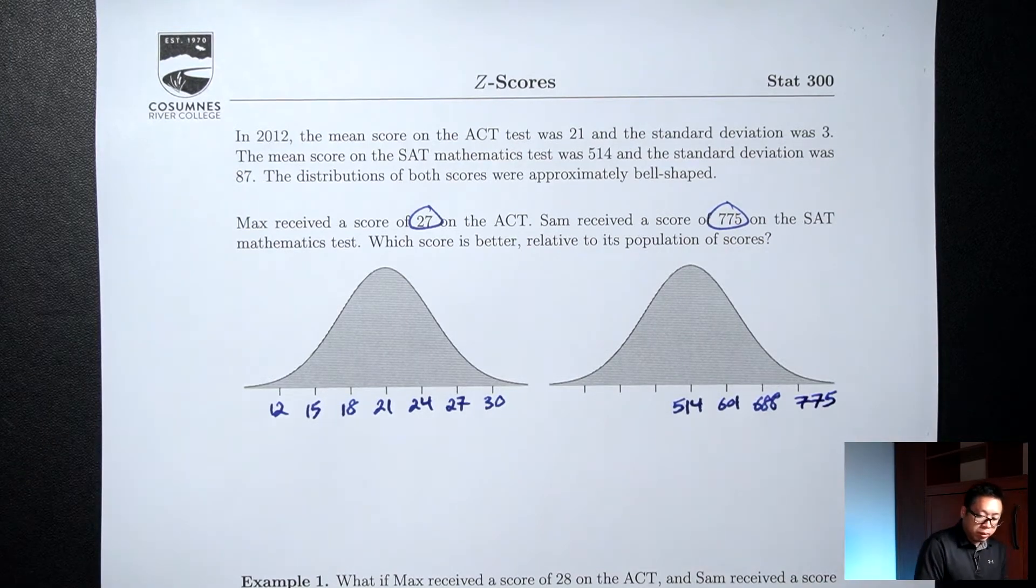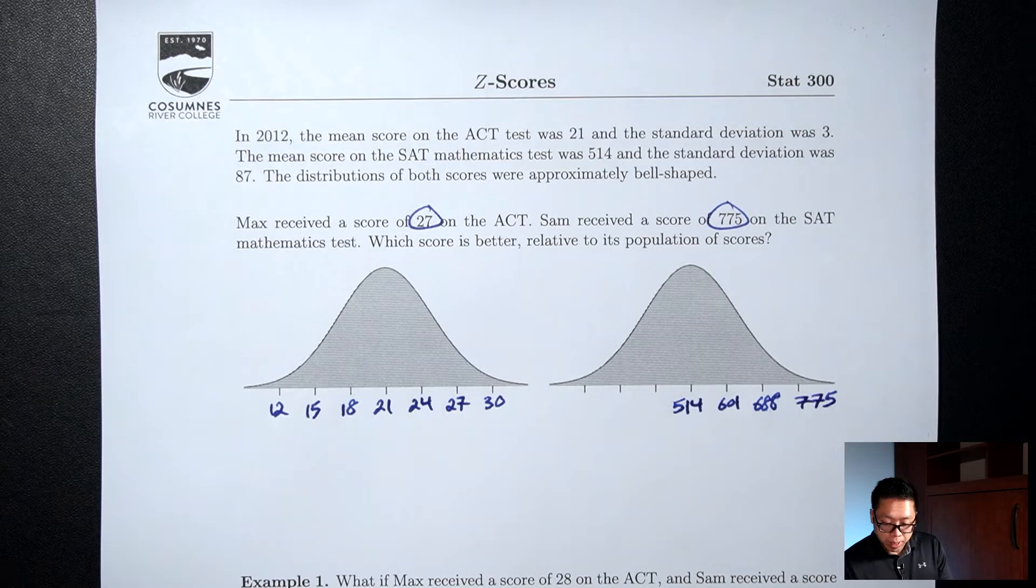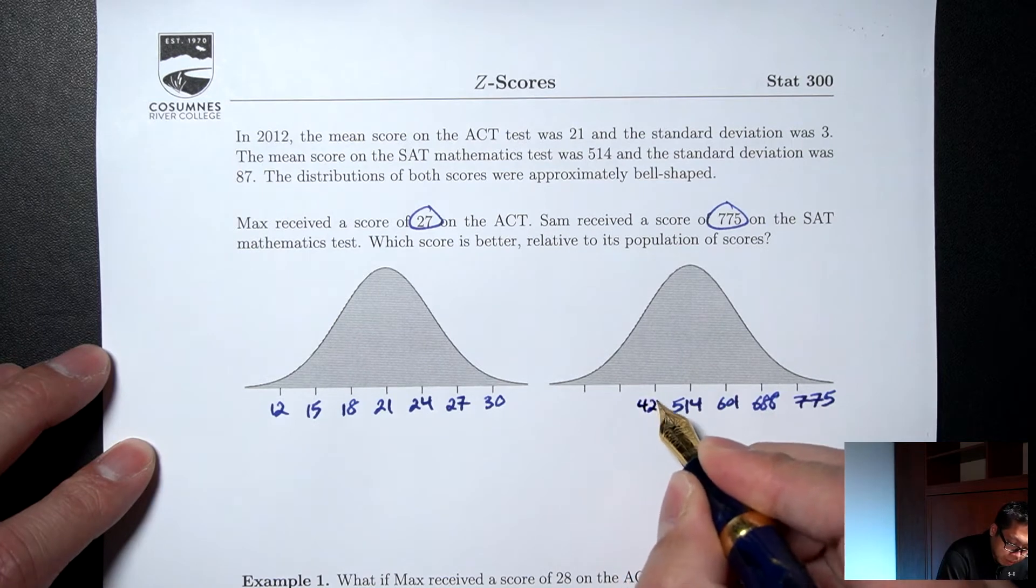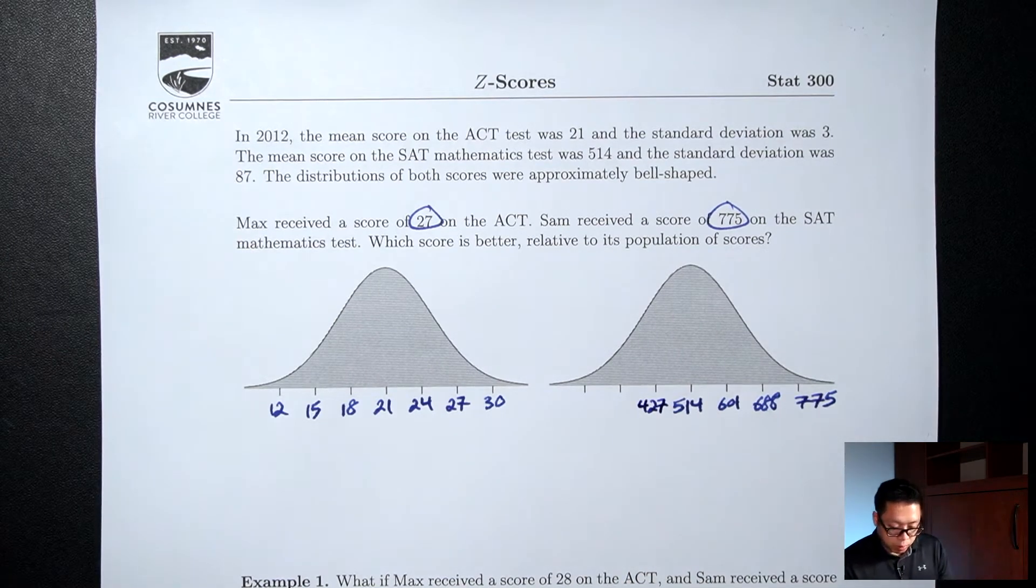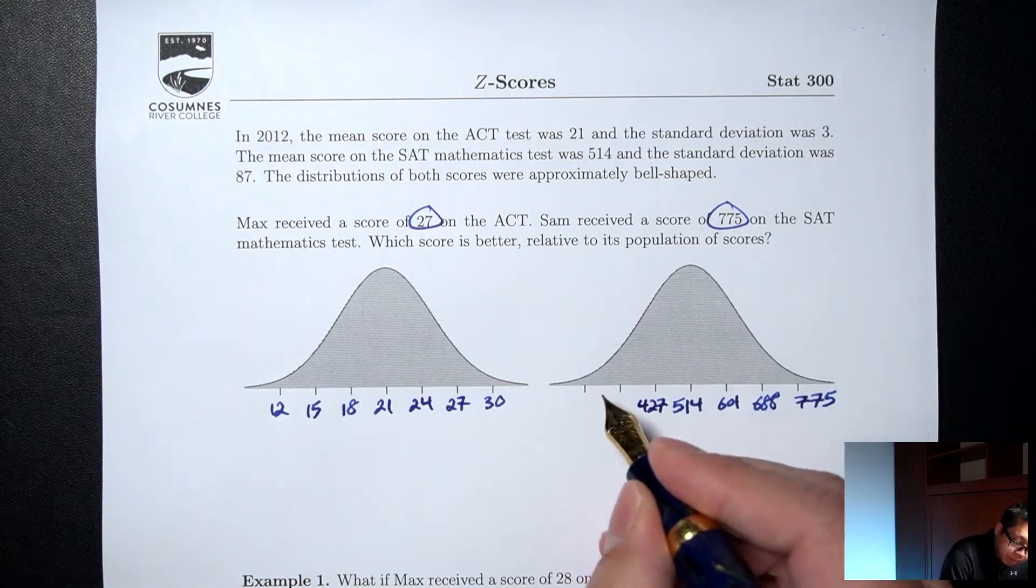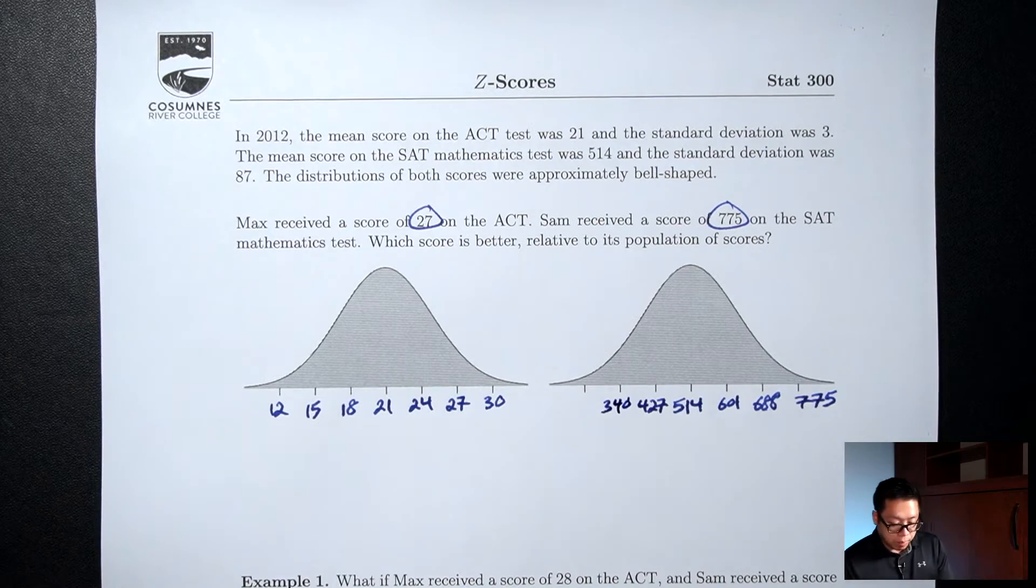Going the other direction, subtract 514 minus the standard deviation. So 514 minus 87, 427. Minus 87 again, so 427 minus 87, that's 340. Minus 87 one last time, 253.